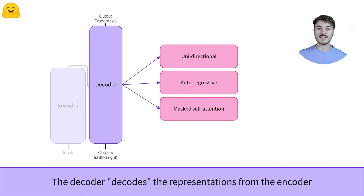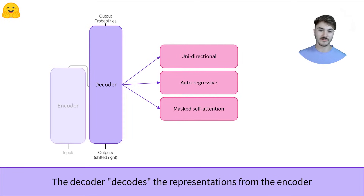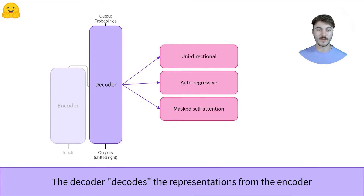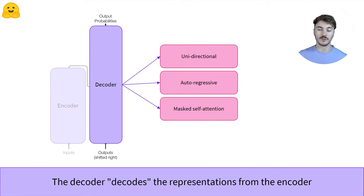The decoder is similar to the encoder. It can also accept text inputs. It uses a similar mechanism as the encoder, which is the masked self-attention. It differs from the encoder due to its unidirectional feature, and is traditionally used in an autoregressive manner. We recommend you check out the video on decoders especially to understand how all of this works.